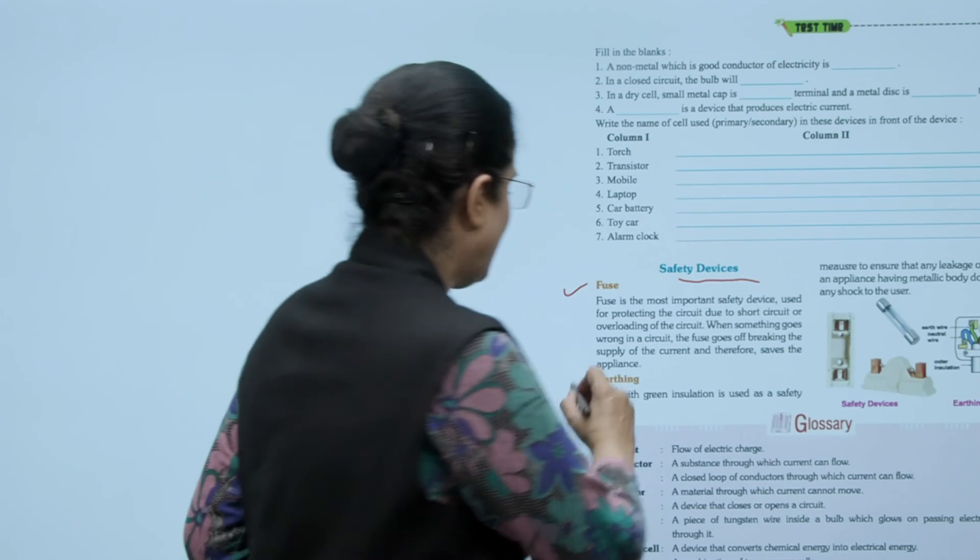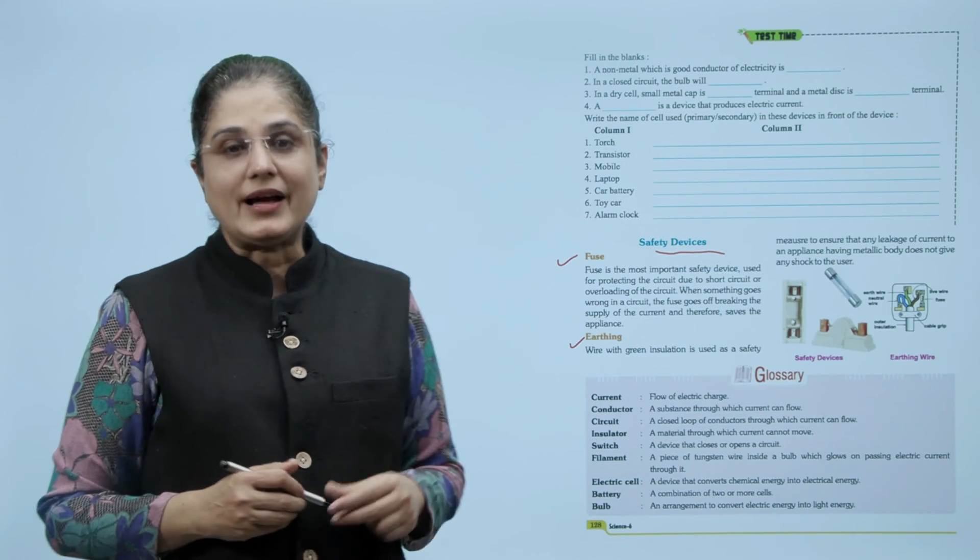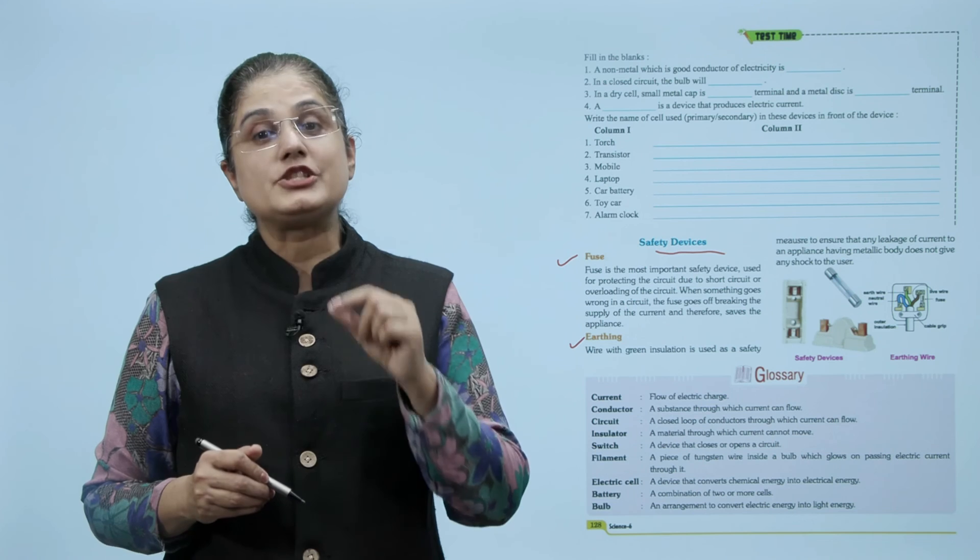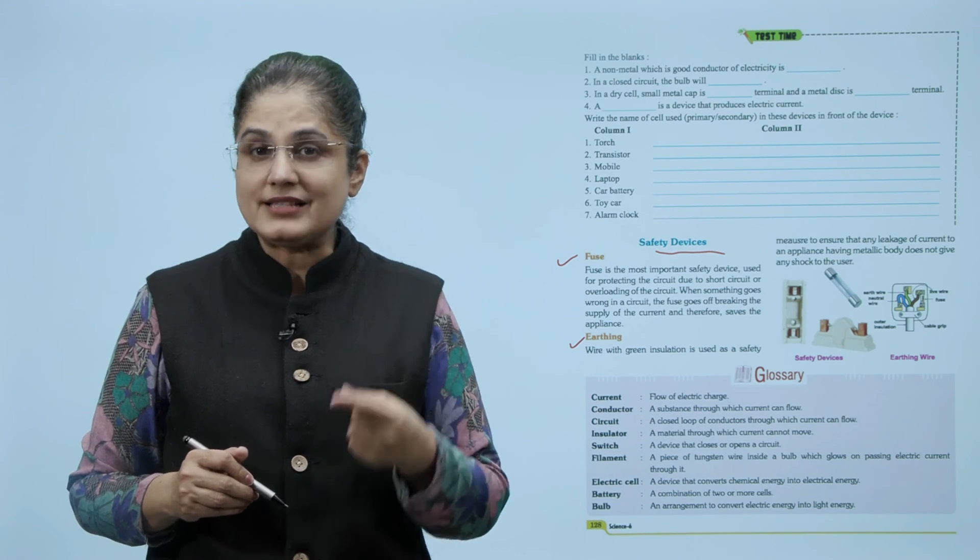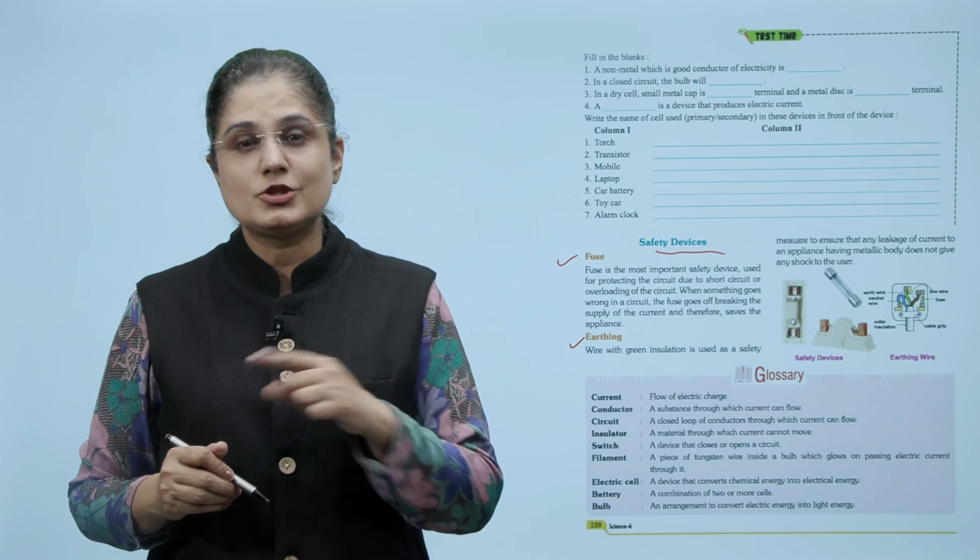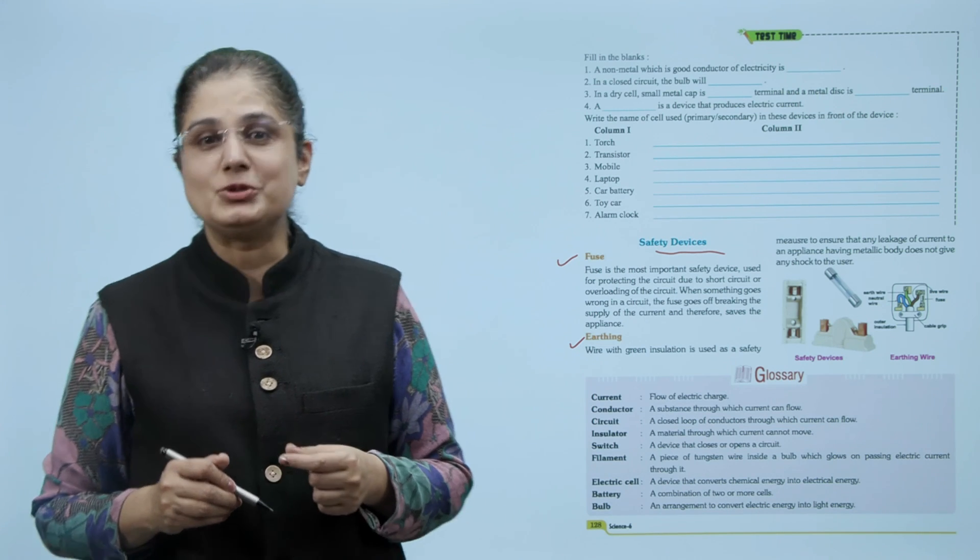Then comes earthing. Wire with green insulation is used as a safety measure to ensure that any leakage of current to an appliance having metallic body does not give any shock to the user.